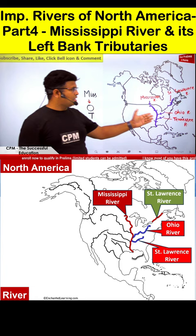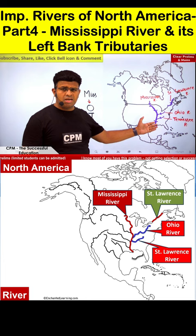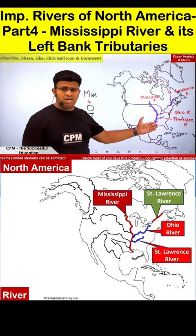Miss is watching OT — Mississippi River: O for Ohio, T for Tennessee. These are the left bank tributaries of the Mississippi River.